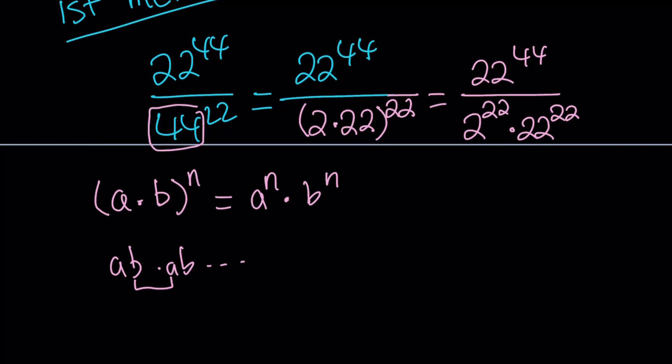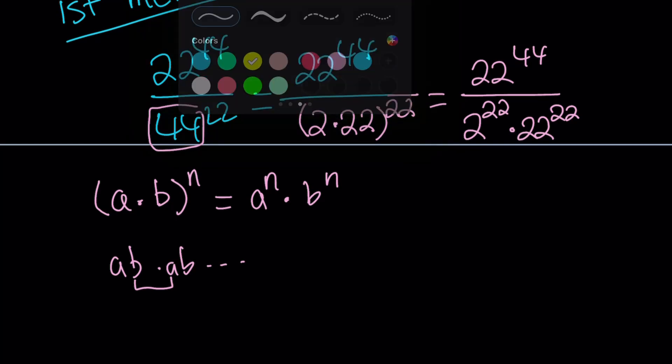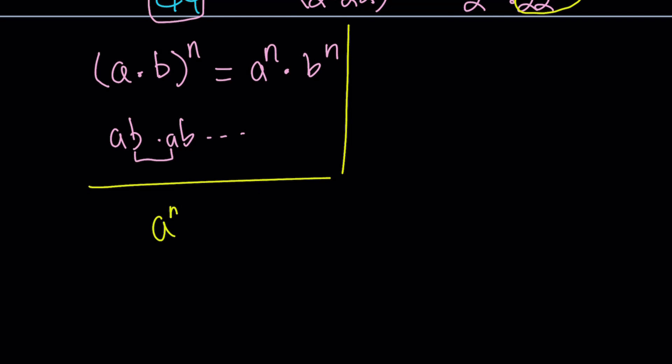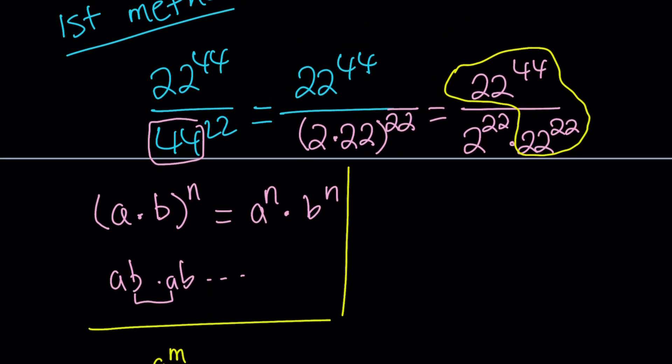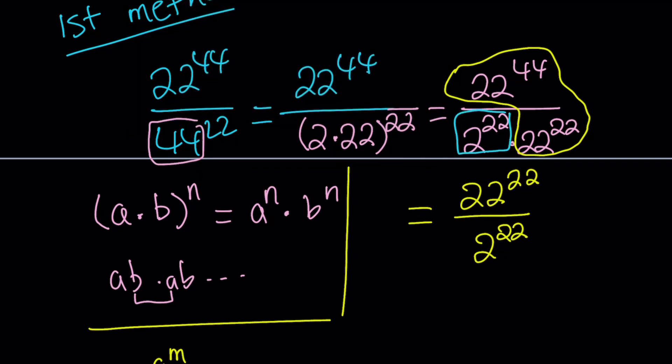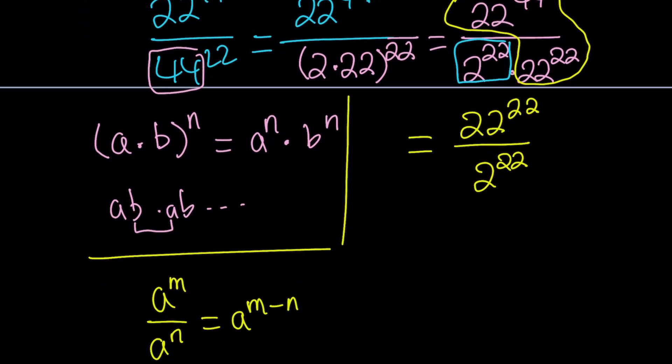Now we can break down the denominator as 2 to the power 22 times 22 to the power 22. In other words, the power of a product is the product of powers. How do we simplify from this point on? I notice I get two numbers whose bases are the same. Another rule applies: if you have a to the power m divided by a to the power n, this equals a to the power m minus n.